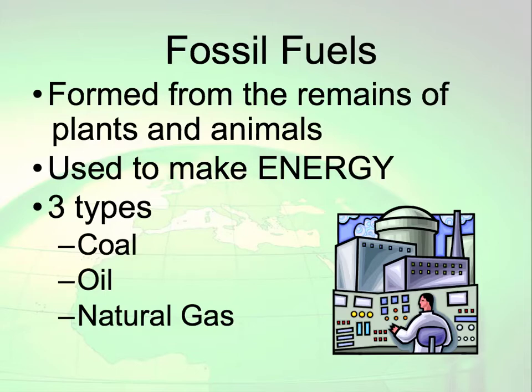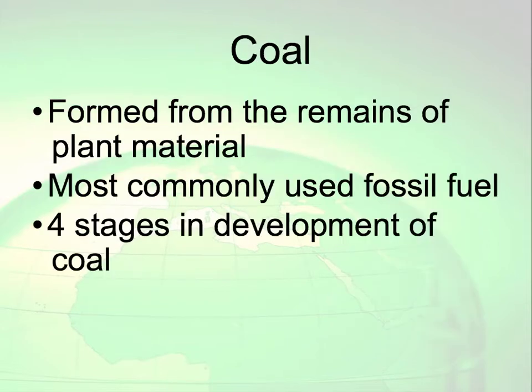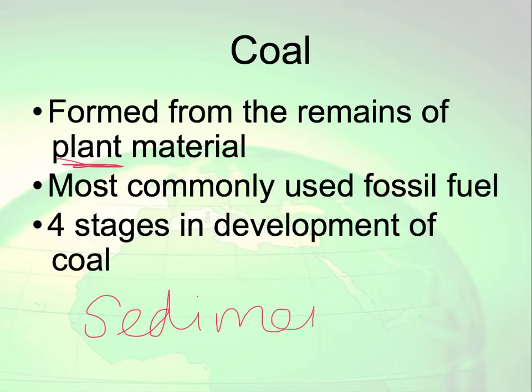Fossil fuels are formed from the remains of plants and animals. They are used to give us energy, and there are three types we will talk about: coal, oil, and natural gas. Coal is formed from plants — decomposing plant material — and it is a sedimentary rock. It is our most commonly used fossil fuel, and there are actually four stages in the development of coal.